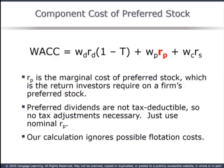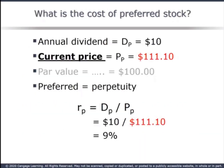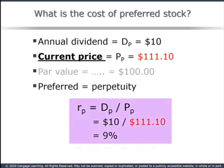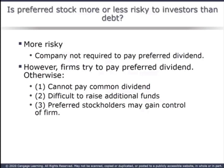Moving across the equation, our next component is the cost of preferred. Again, we need a marginal cost — the cost to Coleman if they issued preferred stock now. Preferred dividends are not tax deductible, so there's no tax adjustment, and we'll ignore flotation costs at this point. Recall that the formula for the cost of preferred is merely the basic constant growth model with G equals 0. Note that the equation uses the current price, not the par value. The cost of preferred is $10 divided by $111.10, which equals 9%.